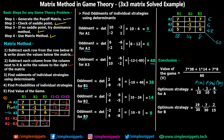Similarly, we calculate the optimum strategy for player B. P(B1) = 38/60 = 19/30; P(B2) = 14/60; P(B3) = 8/60. You can reduce these fractions. So B's optimum strategy probabilities for B1, B2, and B3 are now determined.